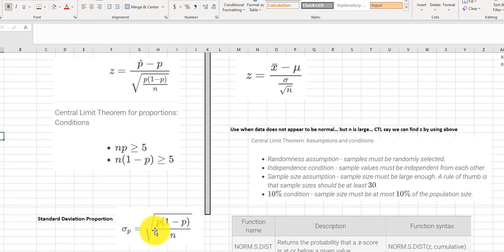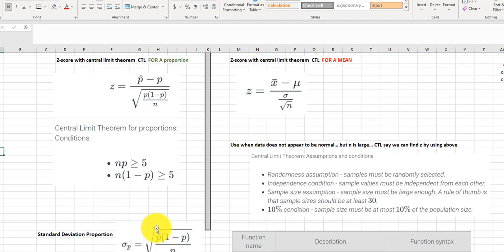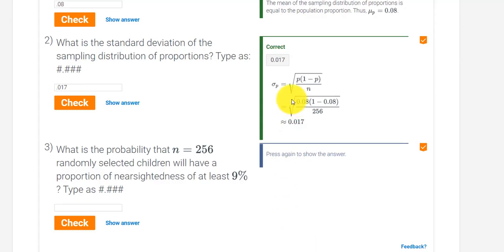Because we know z equals the 0.09 minus 0.08 divided by the standard deviation. And we know what this standard deviation is, right, we did that down here, it was 0.017. So p-hat minus p, just want to make sure we're all on the same page here.